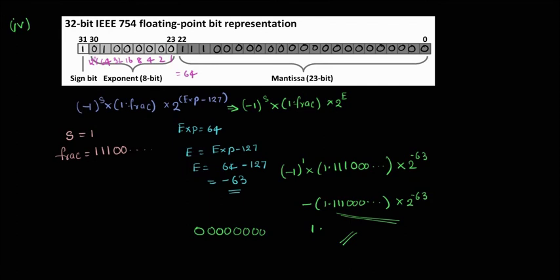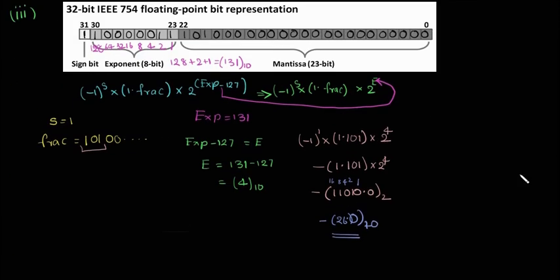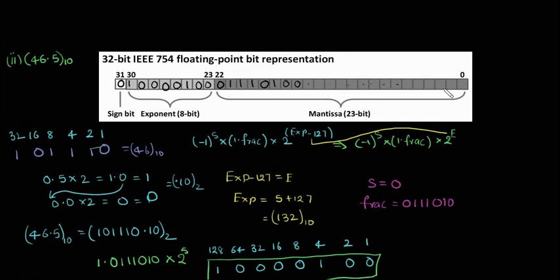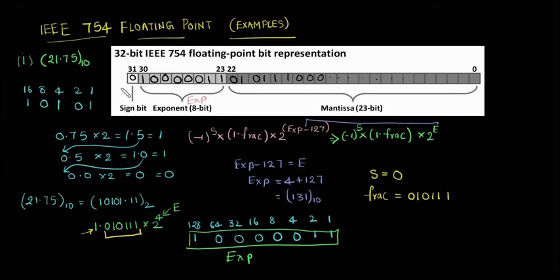The assignment for you is to convert the given number into floating-point representation and check whether you get the same answer, and also convert back to decimal to verify you get 46.5. That's all for this video. I hope you have enjoyed. See you next time — until then, happy learning.